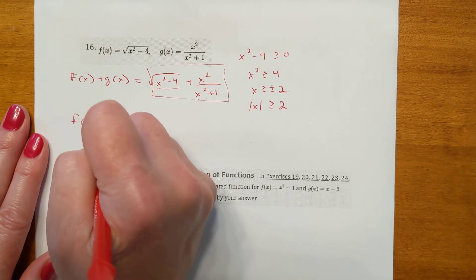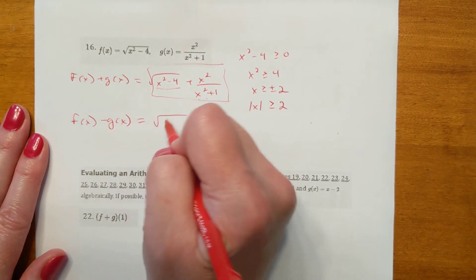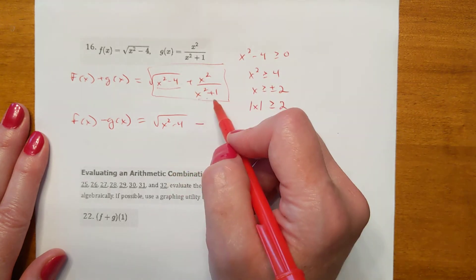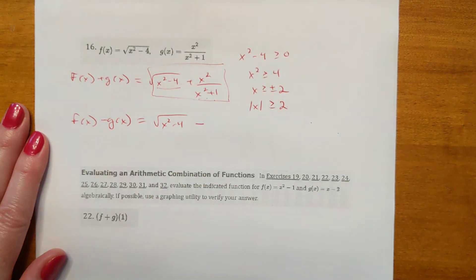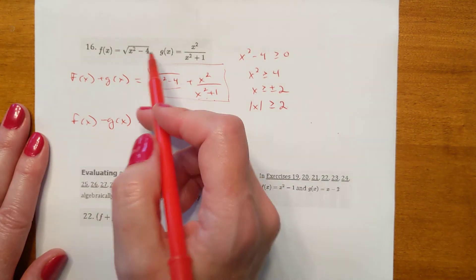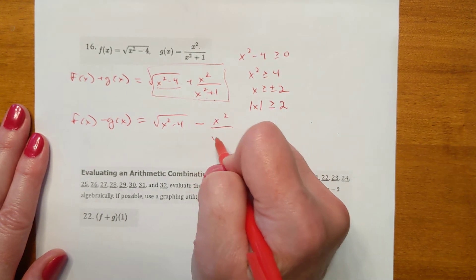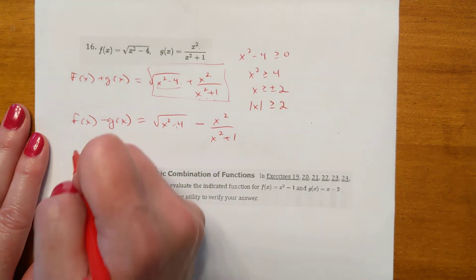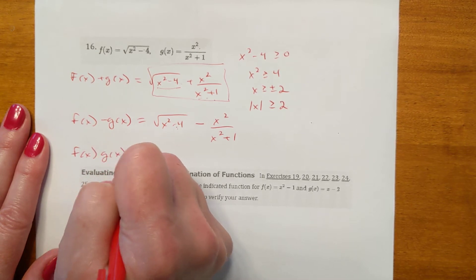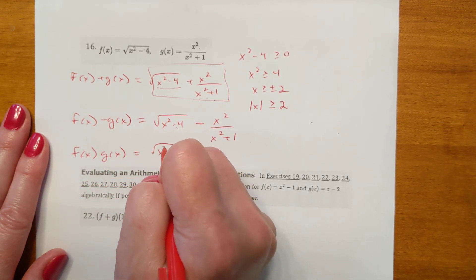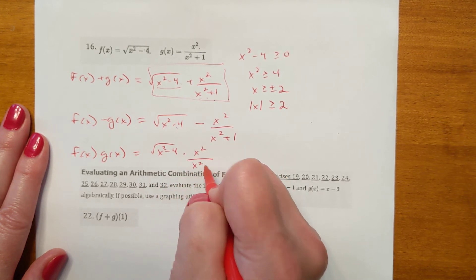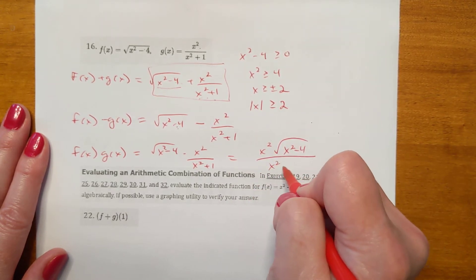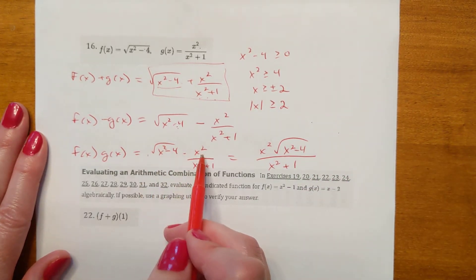When we subtract, f(x) minus g(x), that gives the square root of x squared minus 4 minus x squared over x squared plus 1 — same domain restriction applies. For f times g, multiplying gives the square root of x squared minus 4 times x squared over x squared plus 1, which simplifies to x squared times the square root of x squared minus 4, all over x squared plus 1.